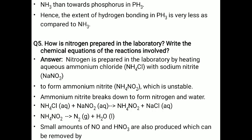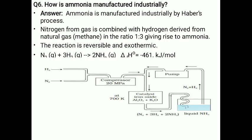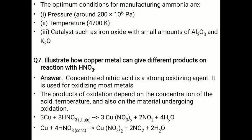Question 6: How is ammonia manufactured industrially? In this process we use the Haber process. Question 7: Illustrate how copper metal can give different products on reaction with nitric acid. Copper reacts with nitric acid to form copper nitrate.